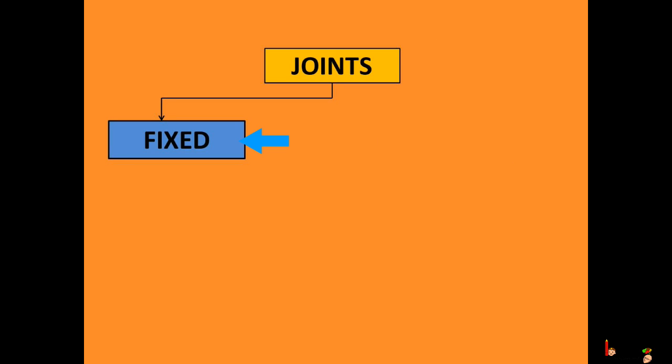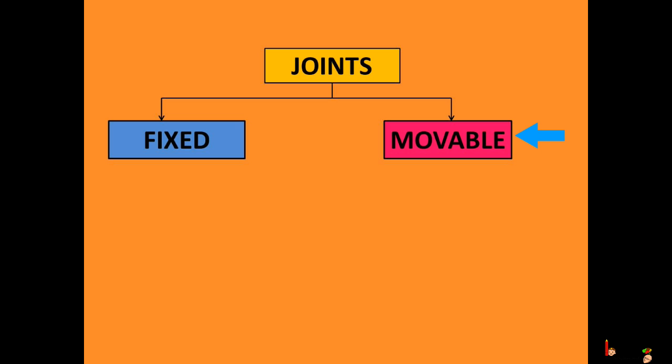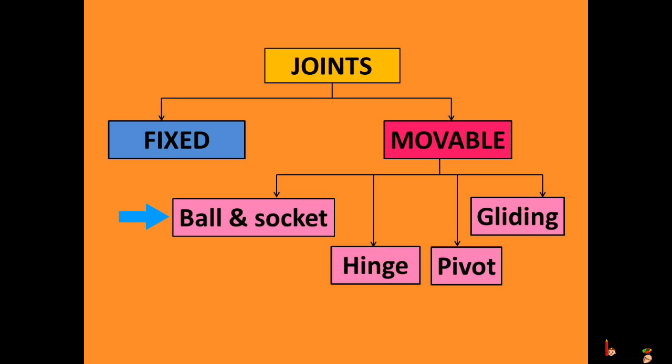The joints are of two types: fixed and moveable joints. The moveable joints can be further categorized into four groups: ball and socket joint, hinge joint, pivot joint, and gliding joint.